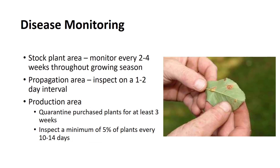Nursery crop production is conducive to a disease epidemic if early stages of disease development are not detected. Efficient and systematic disease monitoring practices must be incorporated as a priority into the production system. The stock plant area should be routinely monitored every 2–4 weeks throughout the growing season. Two months prior to taking cuttings, this routine inspection should occur weekly. Inspect the plants in a random fashion, checking new and old growth, but concentrating predominantly on the new, more susceptible growth.